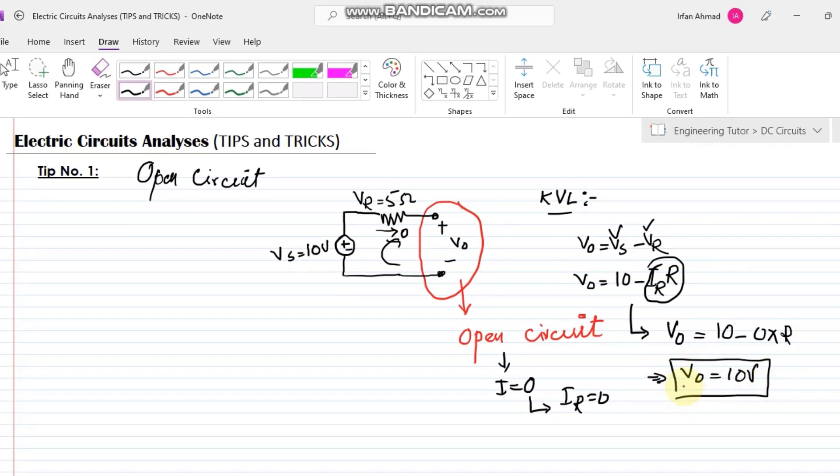So that is a very common problem with the newbies that they cannot calculate the value which is across the open circuit. Any open circuit, the value of voltage is known, some finite value of the voltage is here, but the value of current is zero, always zero. So that is your trick and tip number one.